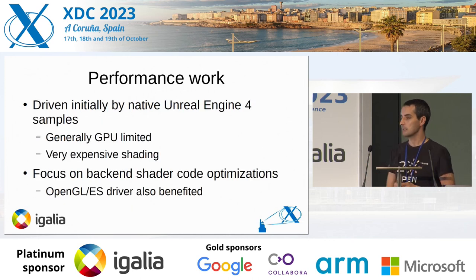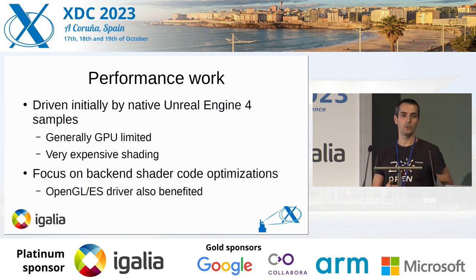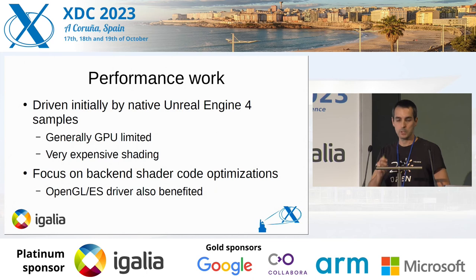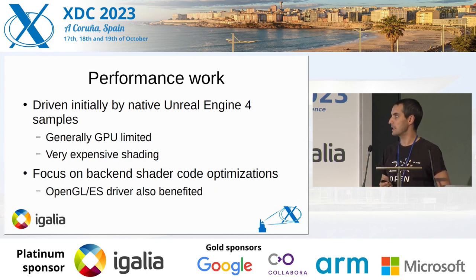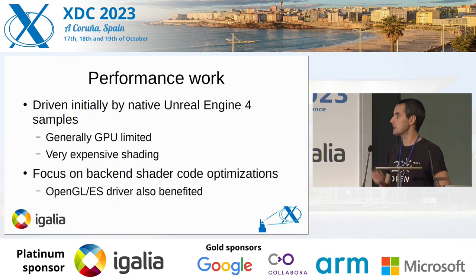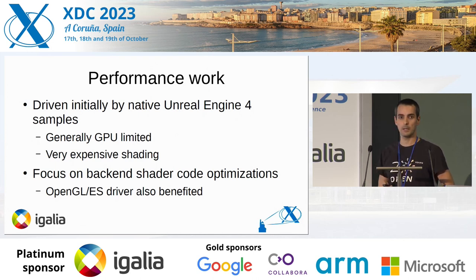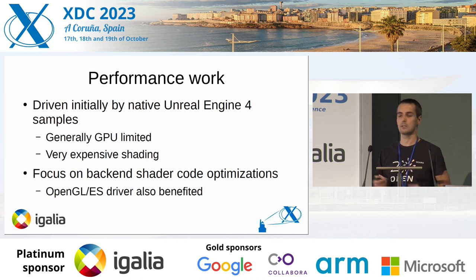At that time we focused the performance work on Unreal Engine 4 samples. They were pushing a lot of what the Raspberry Pi 4 was able to get — they were generally GPU limited and were using really expensive settings. So that means that most of the focus of this performance work was done on the compiler. That also has the advantage that it benefited the OpenGL driver.